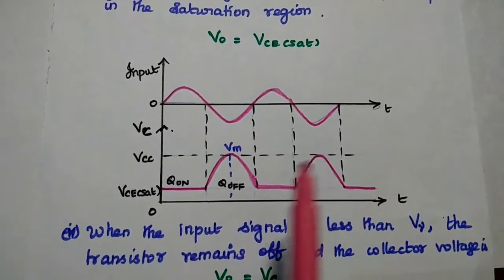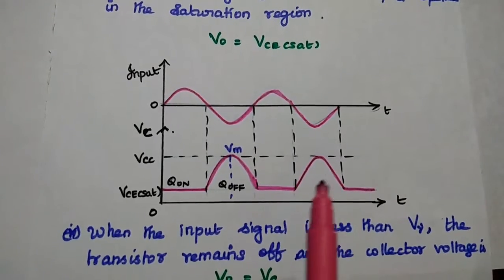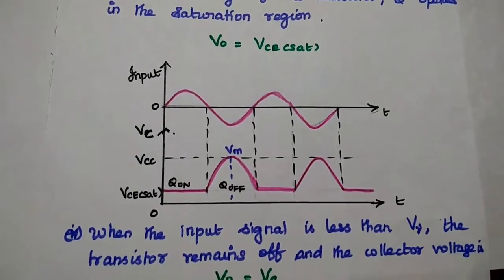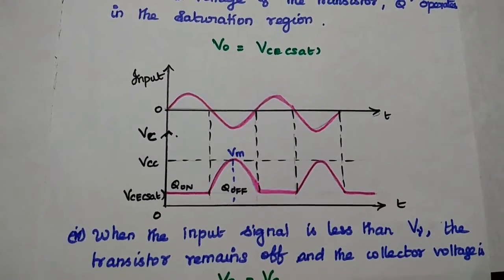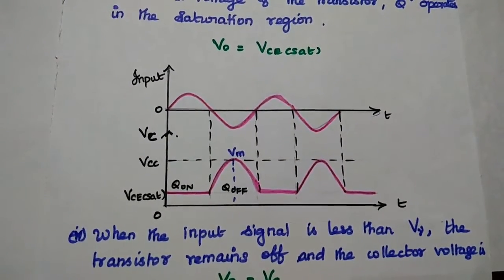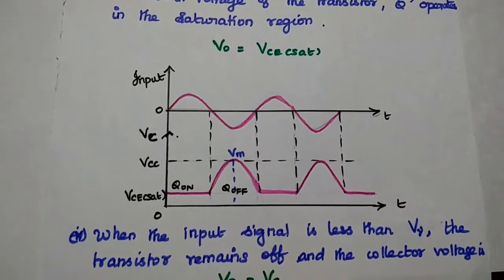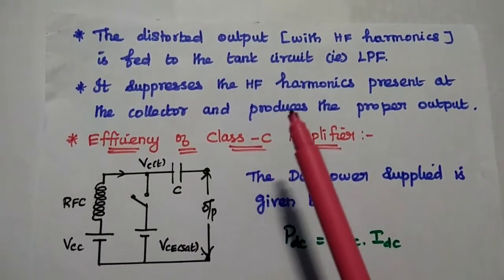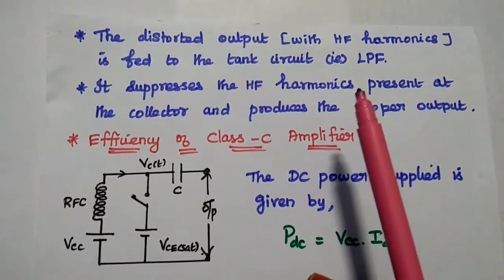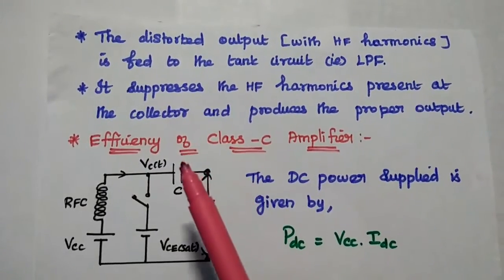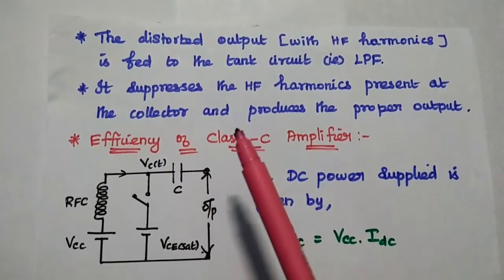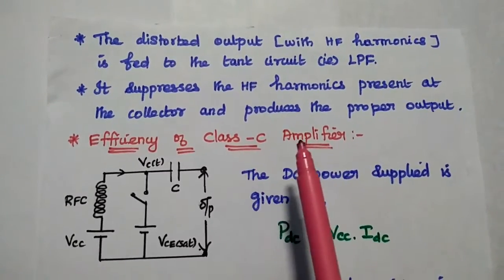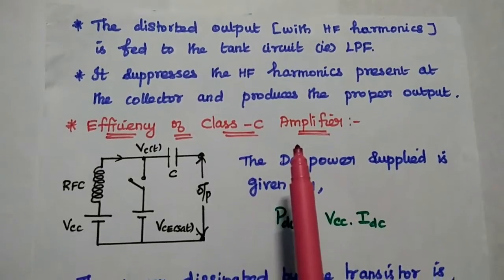So here we can get only a distorted output. Class C amplifier produces highly distorted output. For that, we give this distorted output to the tank circuit to remove the high frequency harmonics. The distorted output is fed to the tank circuit, also known as a low-pass filter. This tank circuit is mainly used to suppress the high frequency harmonics present at the collector side and produces the proper output.